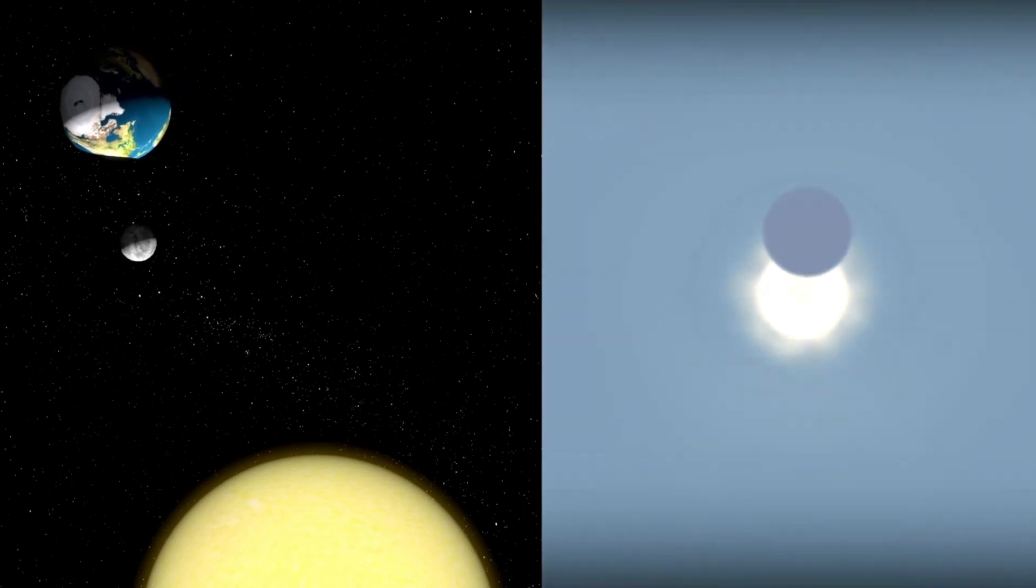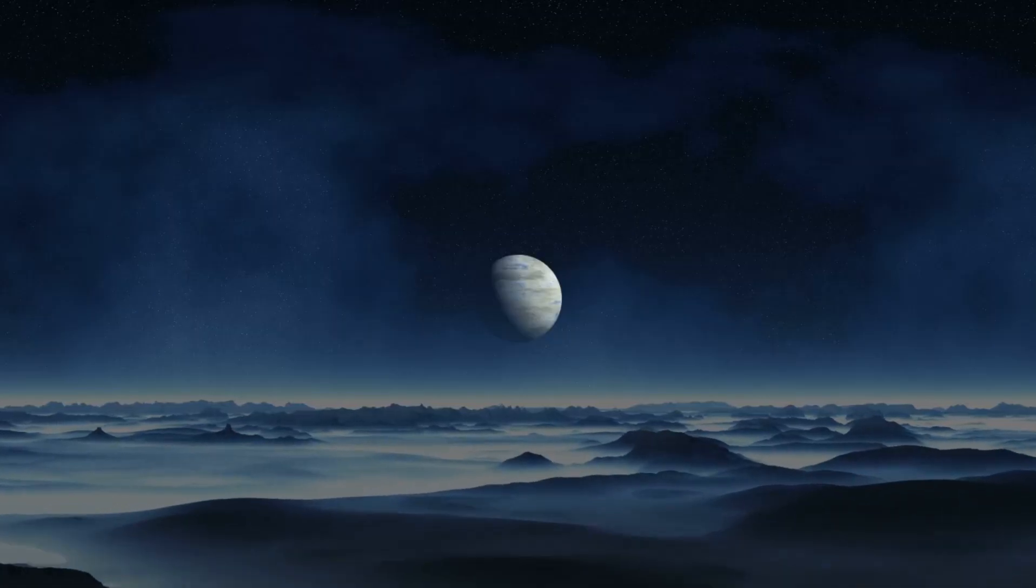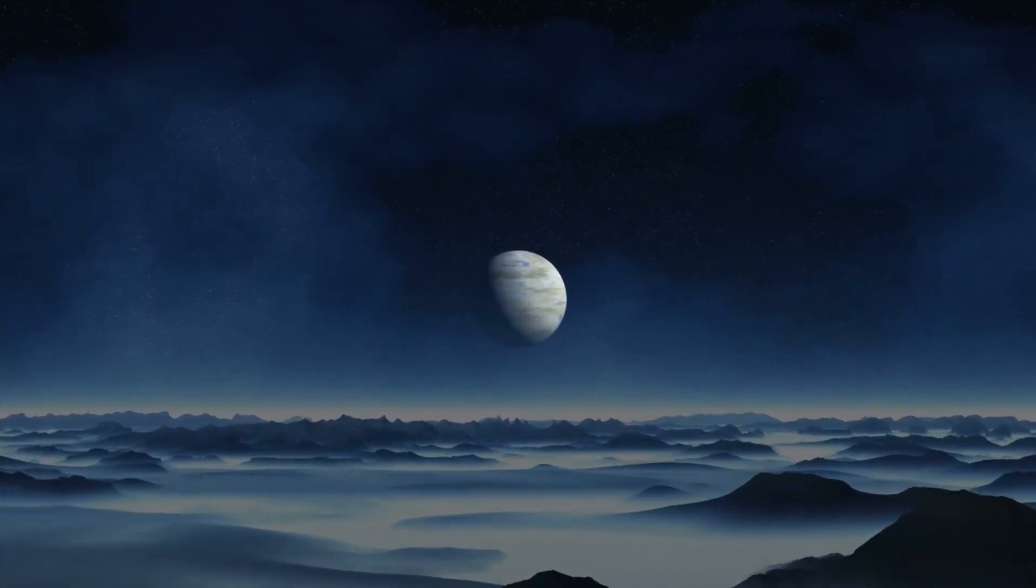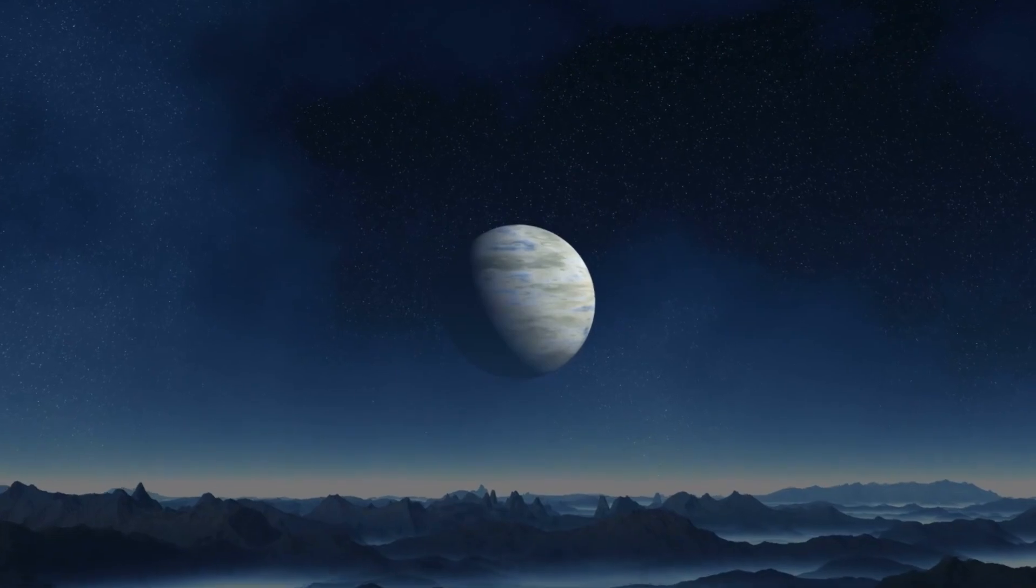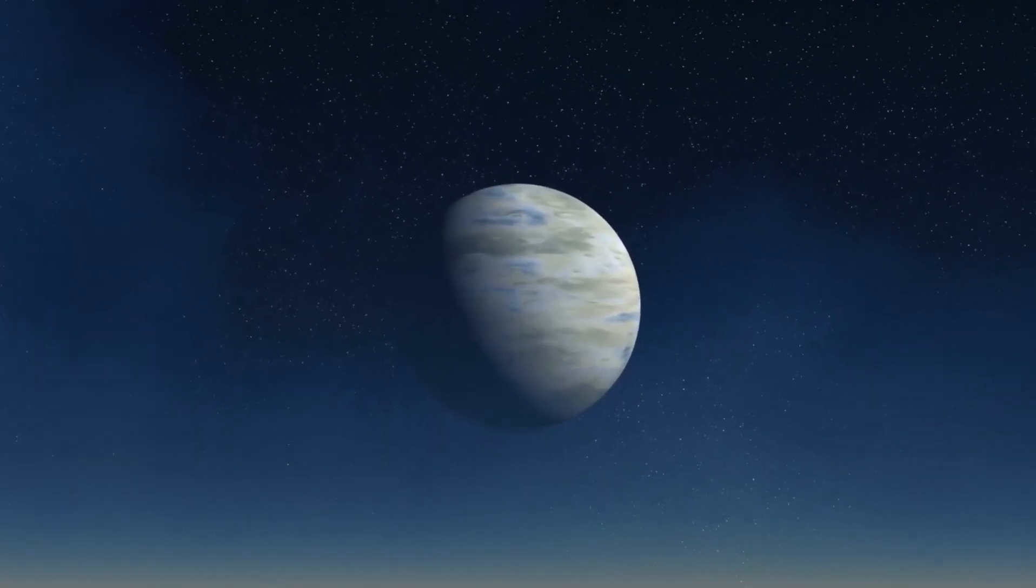K2-18b orbits within the habitable zone of its host star, a red dwarf known as K2-18. This is a region around a star where conditions might be just right for liquid water to exist, one of the key ingredients for life as we know it. Unlike the Sun, which is much larger and hotter, K2-18 is a much cooler star.